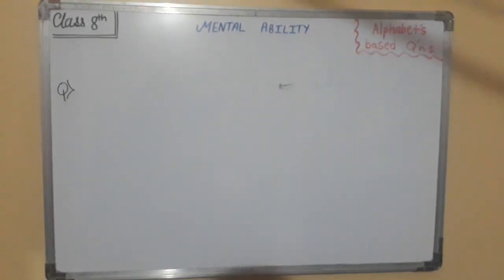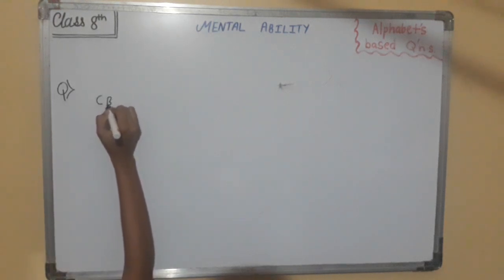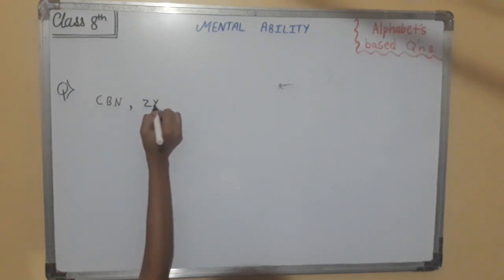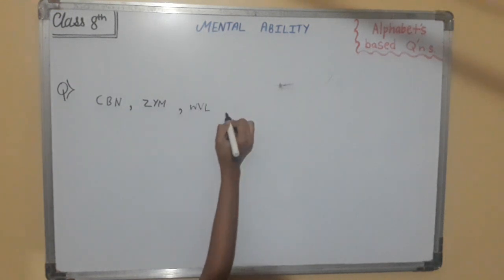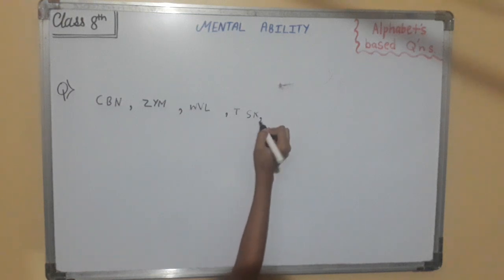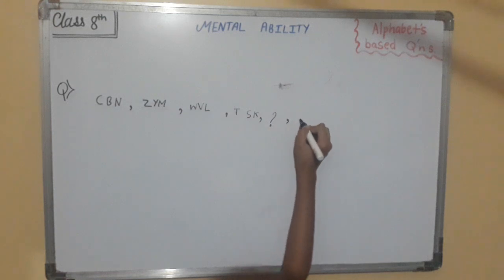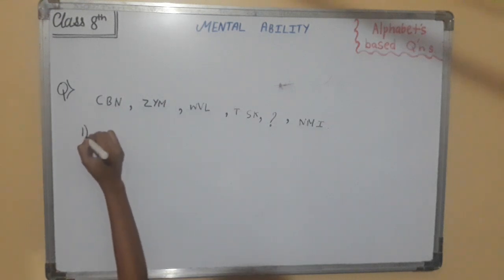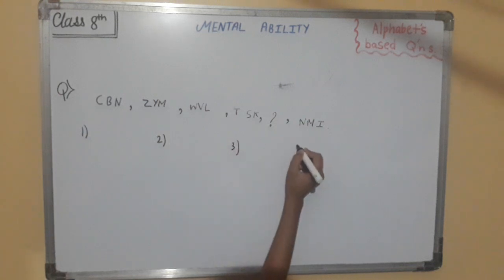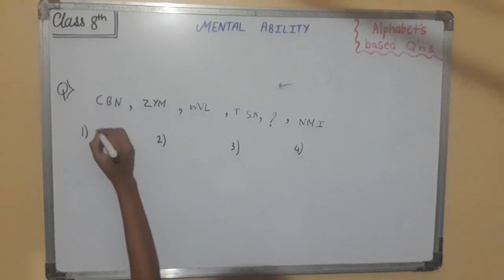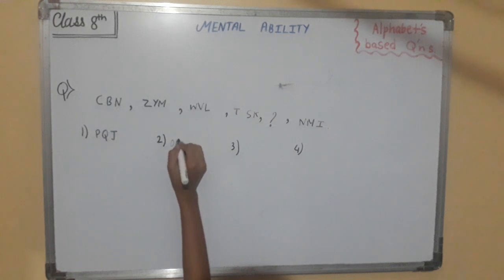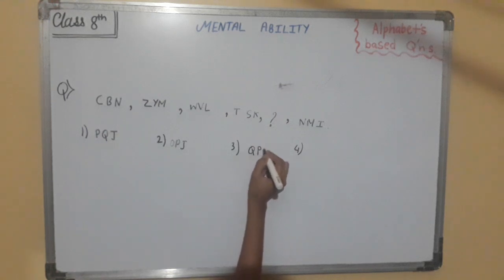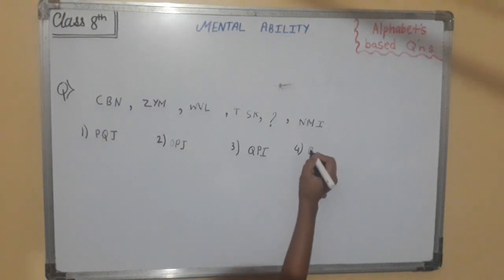Next question is again like that only. First this series is C, B, N, then Z, Y, M, and then W, V, L, then T, S, K, then question mark, after that N, M, I. The options are: first option is P, Q, J; second option is O, P, J; third option is Q, P, I; and the fourth option is Q, P, J.